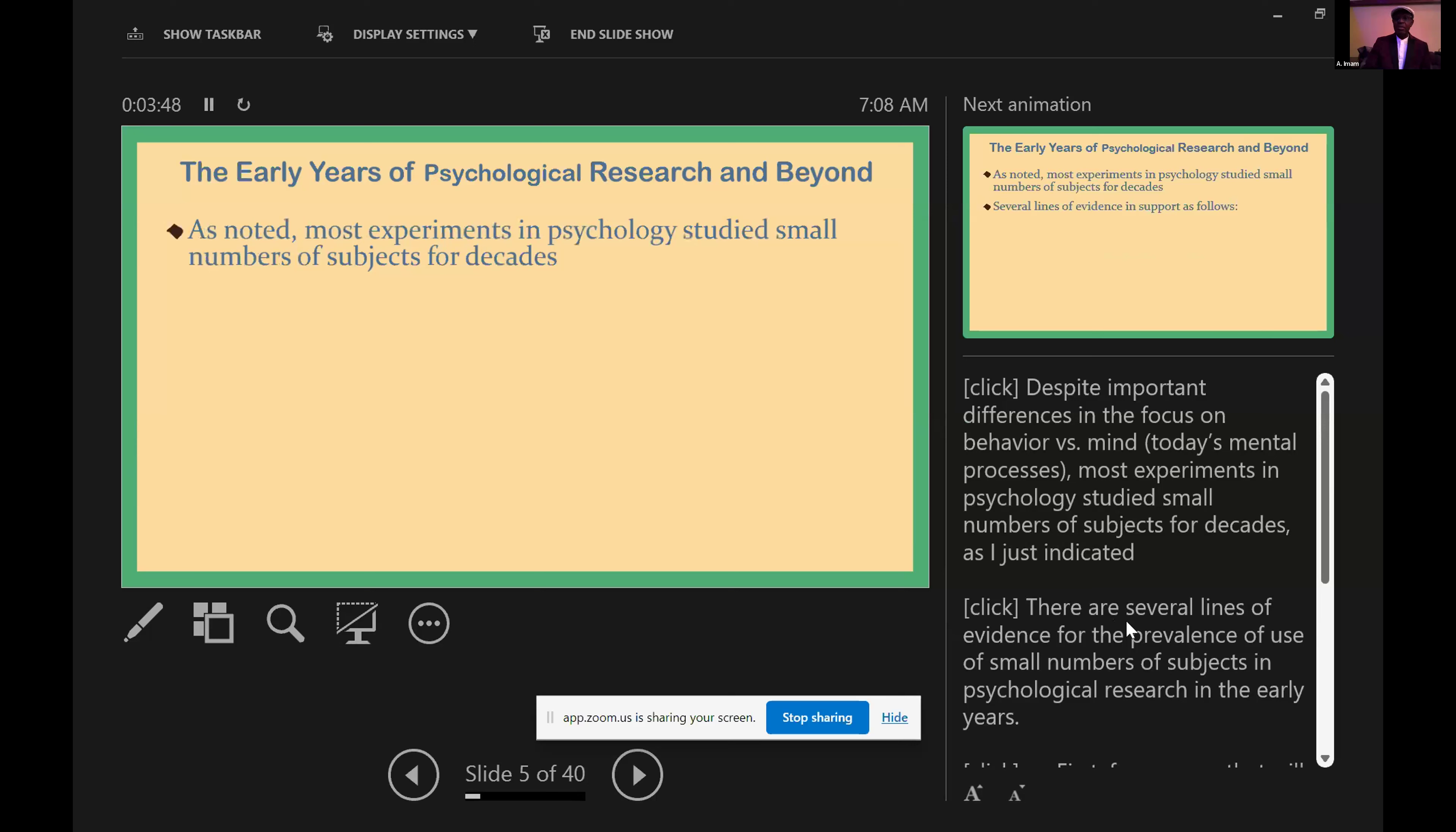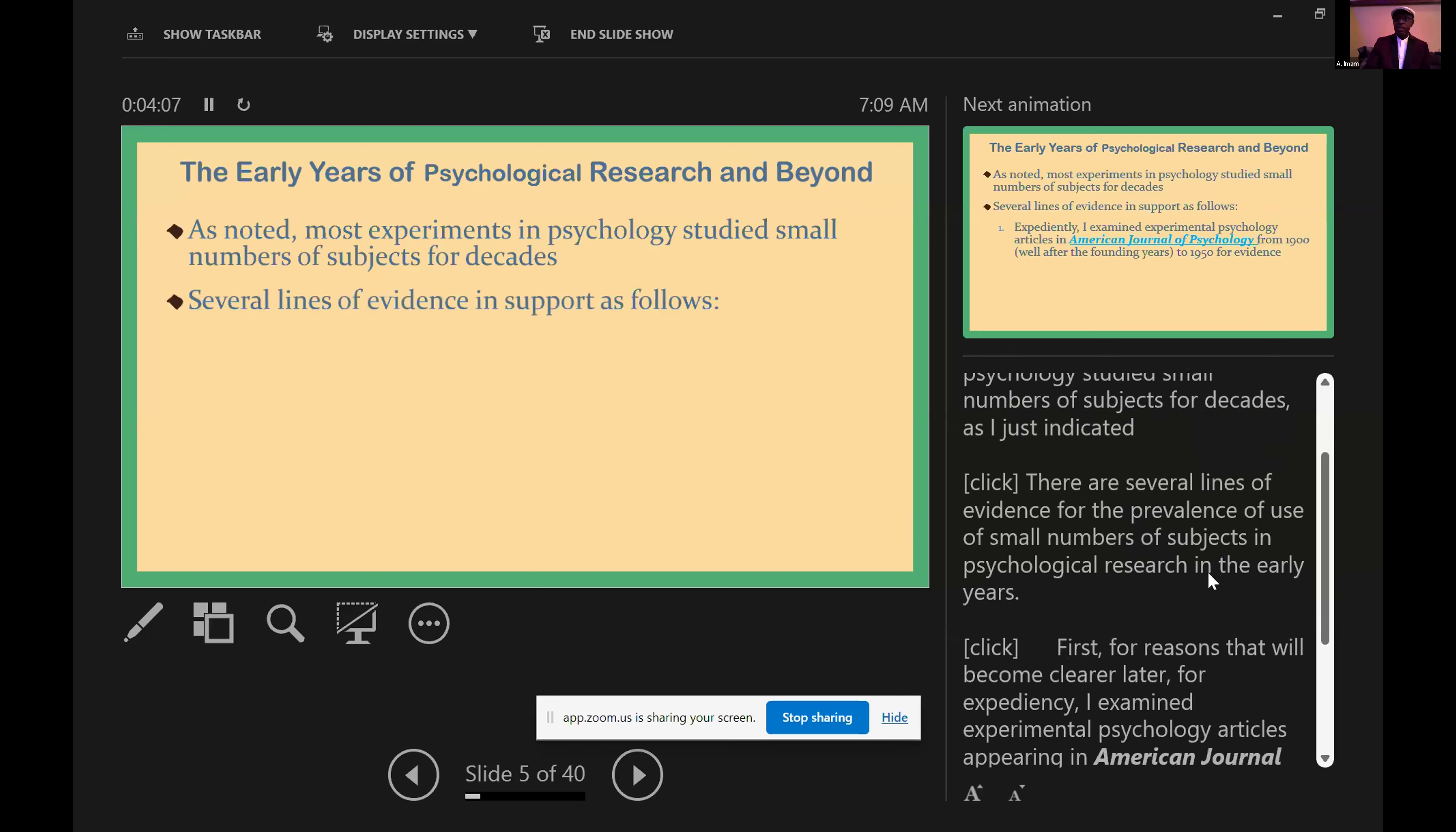Despite important differences in the focus on behavior versus mind, today's mental processes, most experiments in psychology studied small numbers of subjects for decades. There are several lines of evidence for the prevalence of the use of small numbers of subjects in psychological research in the early years.